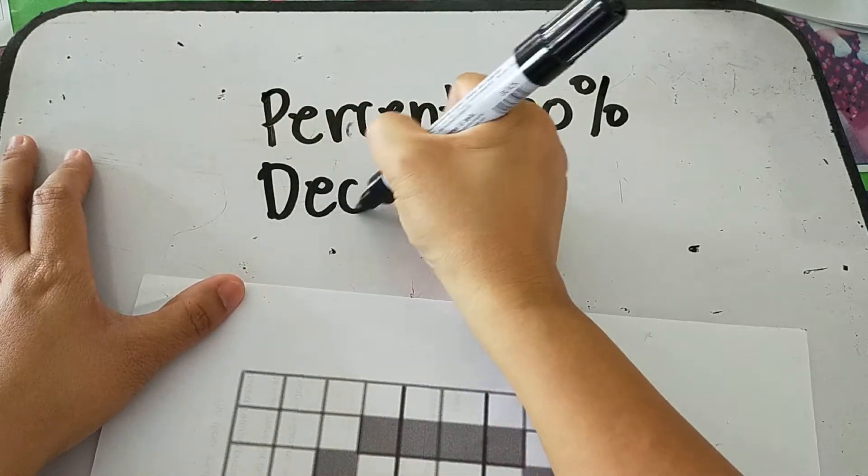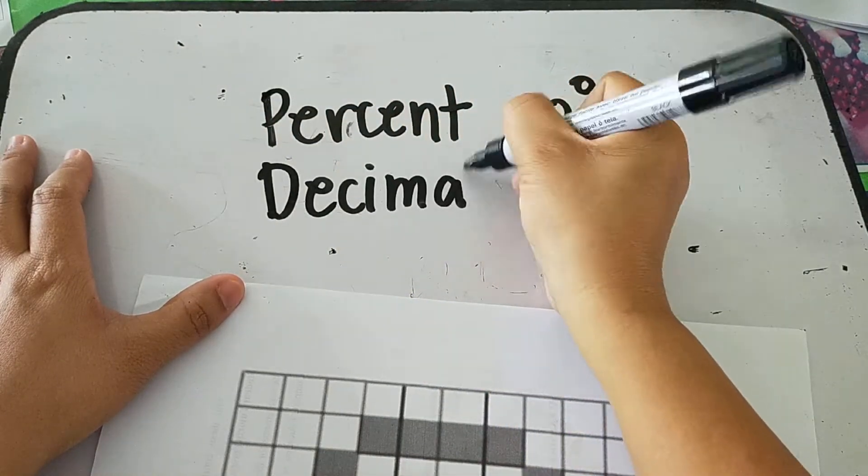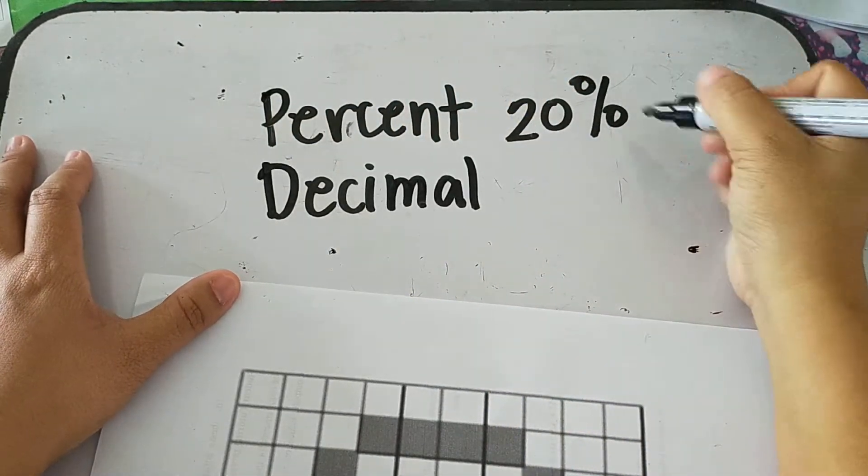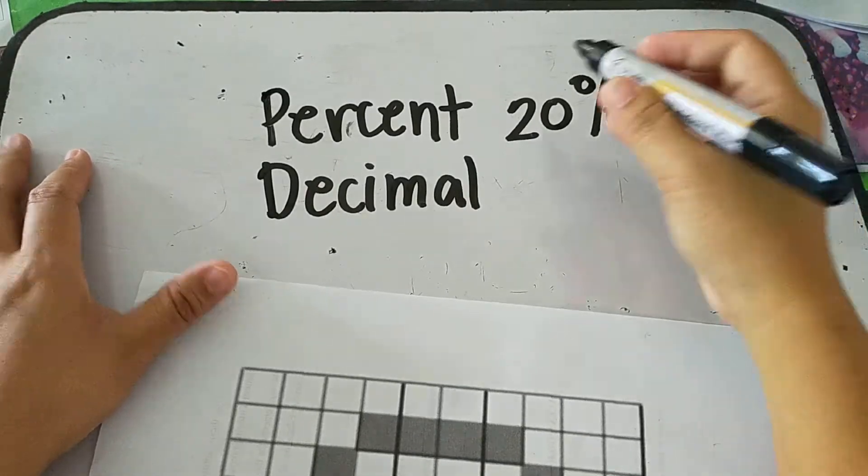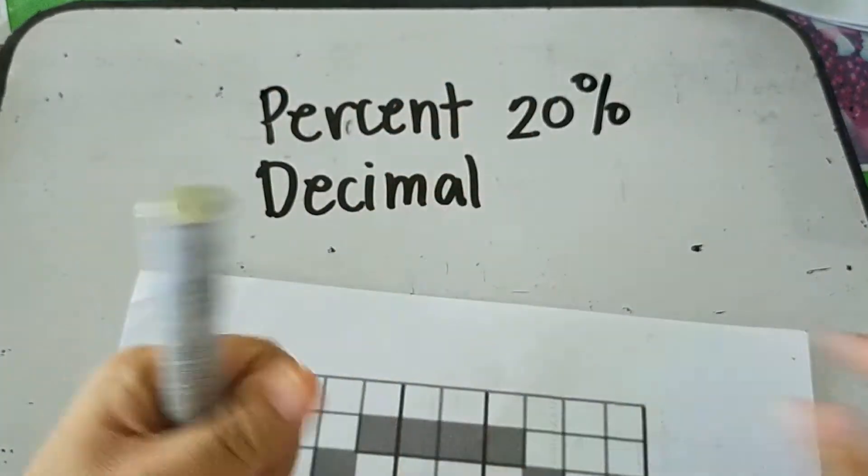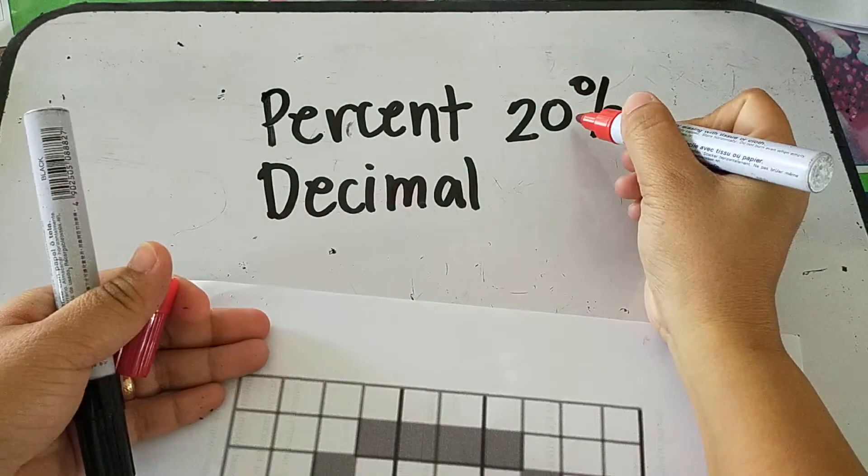How about in decimal form? So in decimal form, all you have to do is just to remove the percent sign. Then afterwards, you're going to move the decimal point to the left twice.